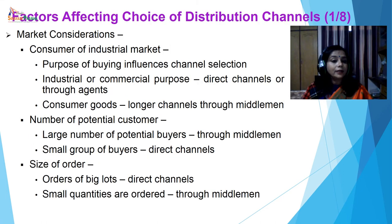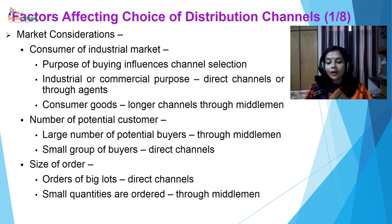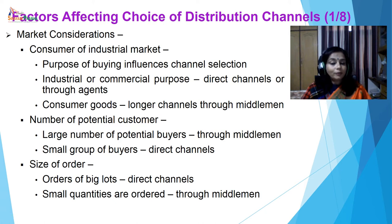The next important heading is factors affecting choice of distribution channels. It depends upon the type of the product, the market condition, the competition, and the company's financial condition, which decides what type of channel they will select. The first consideration is market consideration. First, we have to see whether it is a consumer market or an industrial market. In the case of industrial or commercial purpose, a direct channel or through agents will be a better channel. In the case of consumer goods, you can have a longer channel through middlemen like wholesalers and retailers.